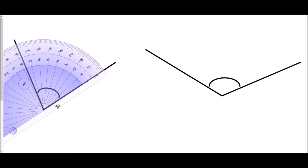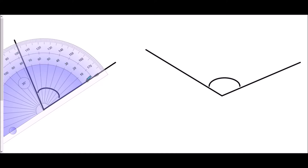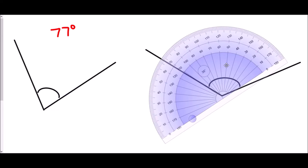Now, looking at the type of angle we are dealing with — this angle is an acute angle; it has not gone past 90 degrees, so the answer must be less than 90 degrees. If we look at the numbers, we have two choices: 80 or 100, 70 or 110. Which set do we use? The key is we want to start from zero, so we use the numbers on the inside. We've got to 70, then a little bit further — the midway marking is 75 — so we have 77 degrees. The symbol for degrees is a little circle above the number.